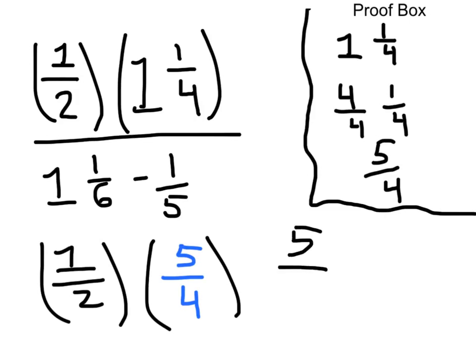And multiplying the denominators 2 times 4, that is equal to 8. And back to our big problem, we know the top is 5/8.